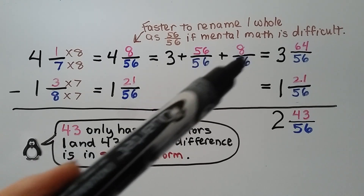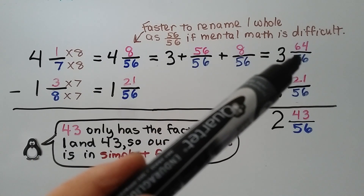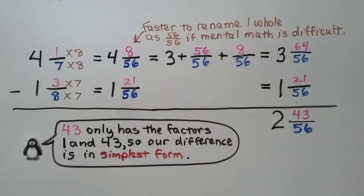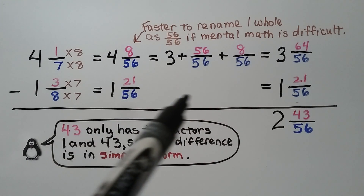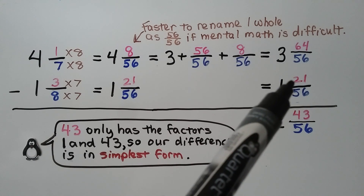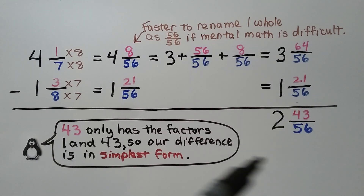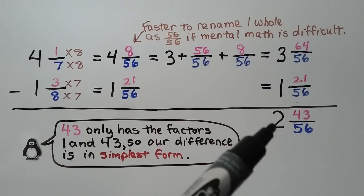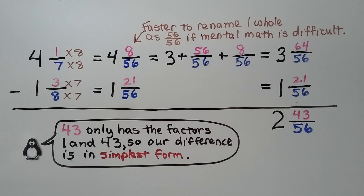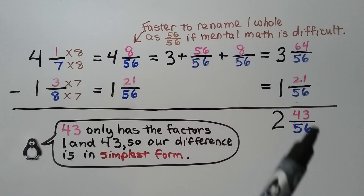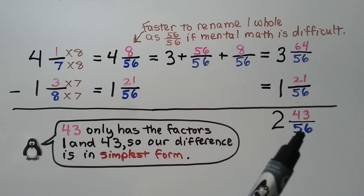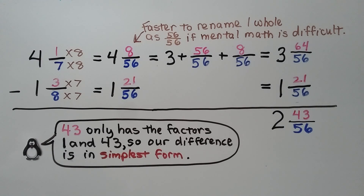We add the two fractions together and get 64 fifty-sixths. So we have 3 and 64 fifty-sixths minus 1 and 21 fifty-sixths. 64 minus 21 is 43 — we have 43 fifty-sixths. 3 minus 1 is 2. Our difference is 2 and 43 fifty-sixths. Now, I know this looks like a very large numerator and denominator that maybe can be simplified, but 43 only has the factors 1 and 43, so our difference is in simplest form.